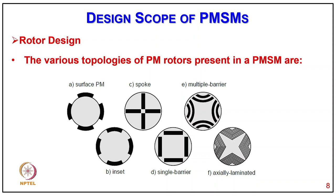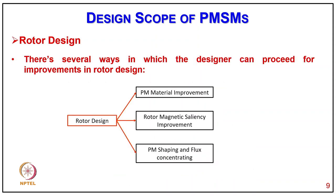Coming to rotor design, the various topologies of permanent magnet rotors in PMSM include surface mounted, high spoke type, multi-barrier, inset, single barrier, and axially laminated. There are several ways the designer can proceed for improvement: permanent magnet material improvement, rotor magnetic saliency improvement, and permanent magnet shaping and flux concentrating.